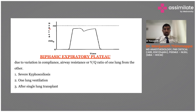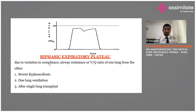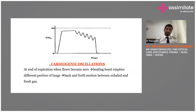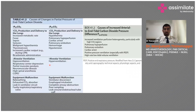Biphasic expiratory plateau is more related to restrictive lung abnormalities or one-lung ventilation with double-lumen tubes. Additionally, in patients with tachycardia, cardiogenic oscillations can also be transmitted through the EtCO2 waveform and can be identified.